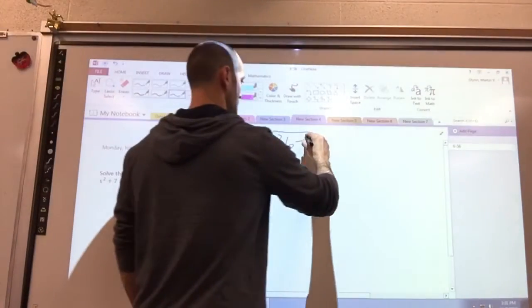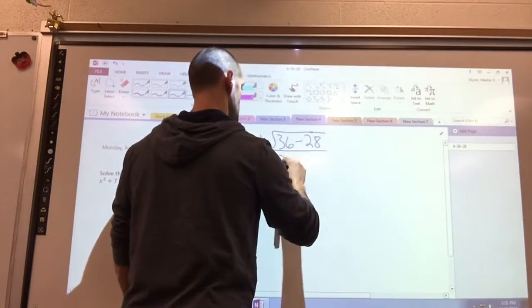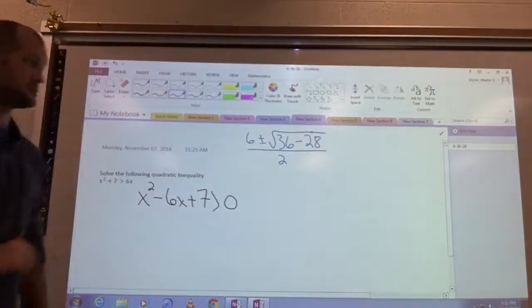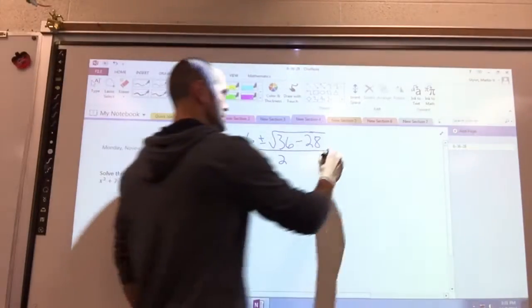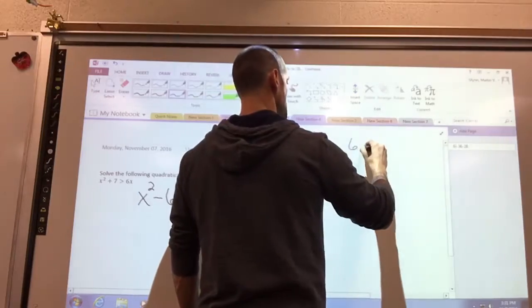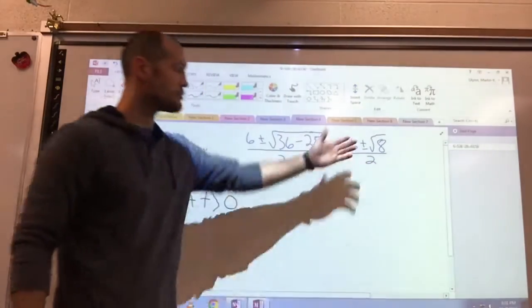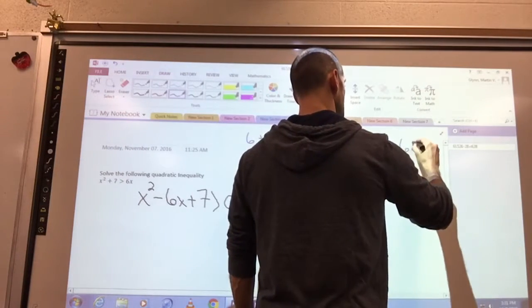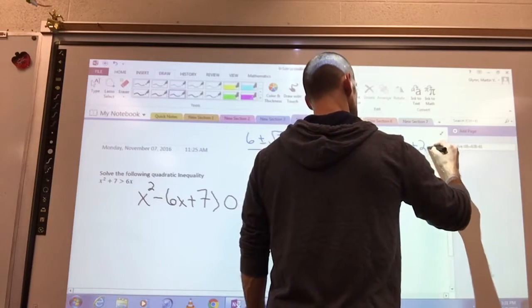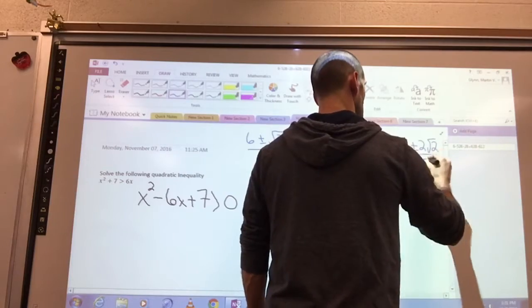Now at this step I get 6 plus or minus square root 8, all over 2. Breaking the radical down, we get 6 plus or minus 2 square root 2, all over 2.